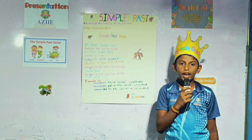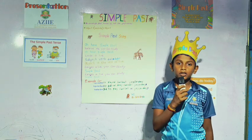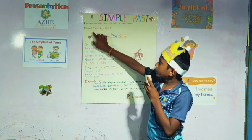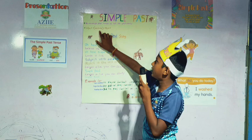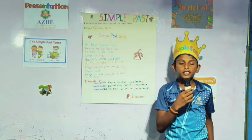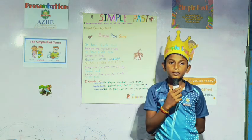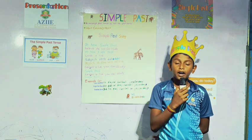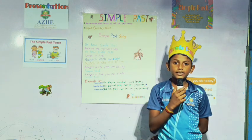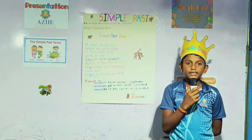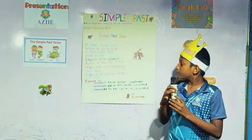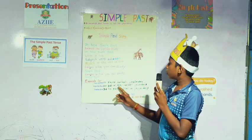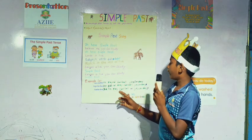Good evening everybody. I am Niles. I am going to tell about simple past tense. We use simple past tense to tell past events. Structure: subject plus verb plus did the past plus object. Oh yeah, simple past, believe me, you can study — subject plus did past, object in the rest of life. Example, normal form: He played football yesterday. Negative form: He did not play football yesterday. Question form: Did he play football yesterday? Thank you.